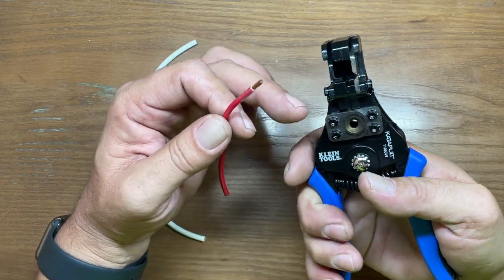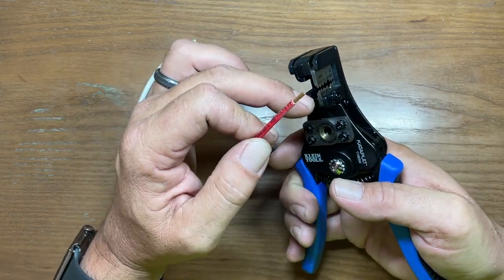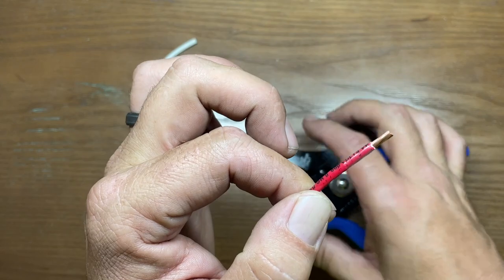So all you're going to do is just set it down, the jaws come down, lock it in place, the cutters drop, and then it does a perfect cut.